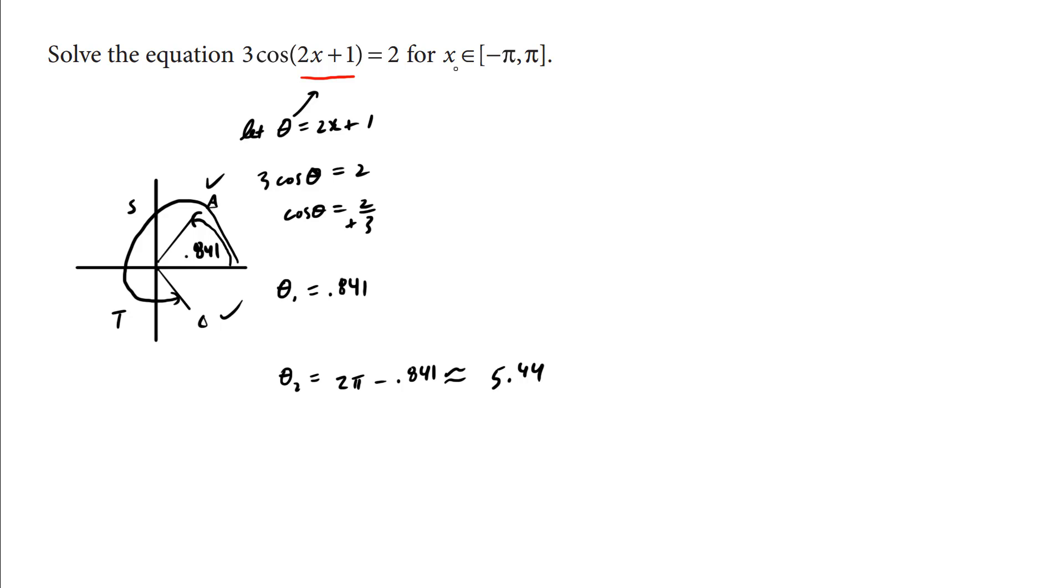Now we're not done. We're dealing with x's, not theta's. What is theta again? It's 2x plus 1. So when you have 2x plus 1 is equal to 0.841, I'm going to subtract 1 from both sides and you have 2x is equal to 0.841 take away 1. So 2x is approximately negative 0.159-ish. Divide both sides by 2. And you get x is approximately negative 0.0795-ish.